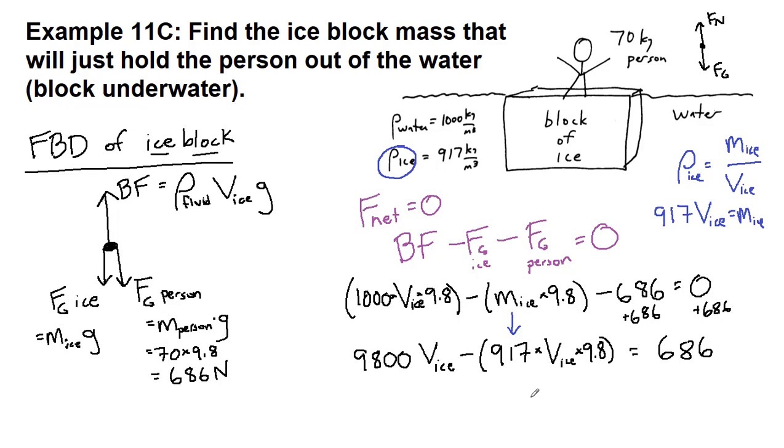I can multiply 9.8 and 917 together in my calculator. We have 9800 and then 9.8 times 917 is 8987, both attached to V_ice, so I've factored that out. This equals 686. So 9800 minus 8987 is 813, so we're going to divide both sides by that 813. The ice block volume is 0.843 cubic meters.